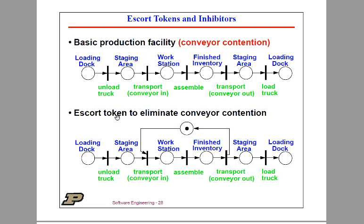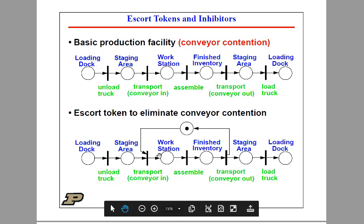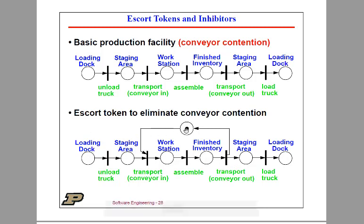If the conveyor is loading parts out toward the loading dock, but then a truck appears to unload, there's a potential contention. We can use what's called an escort token to eliminate things like that — this is basically protecting a resource. We're going to preload this loop to protect the conveyor, since the conveyor can only go one direction at a time. The initial marking of this Petri Net places a token in the escort location, which indicates the conveyor is ready to be used.